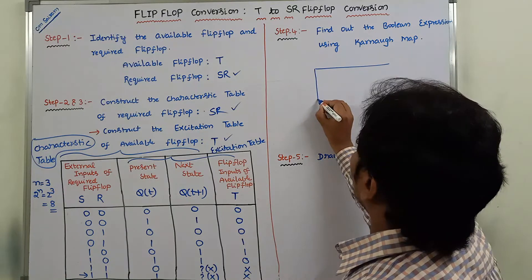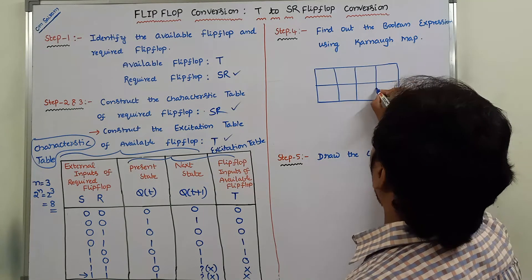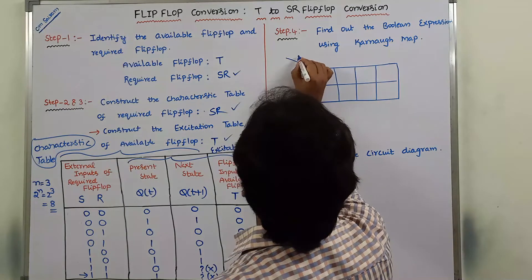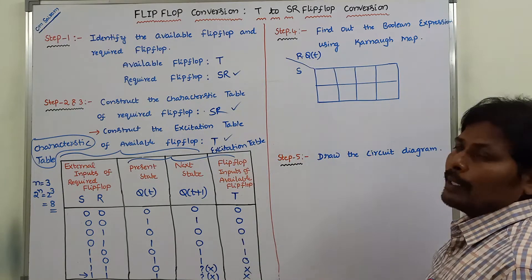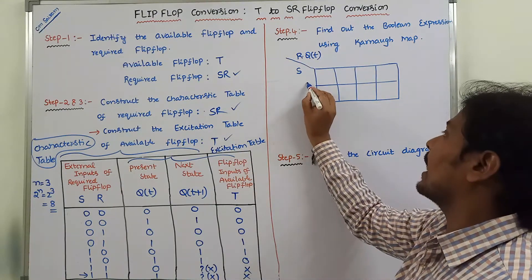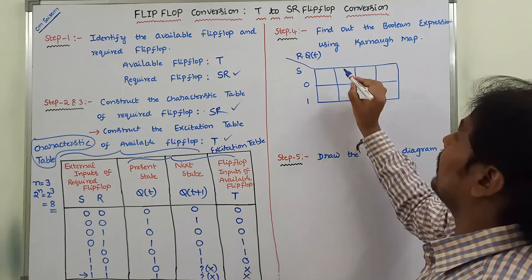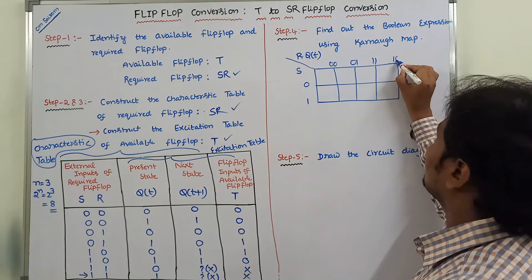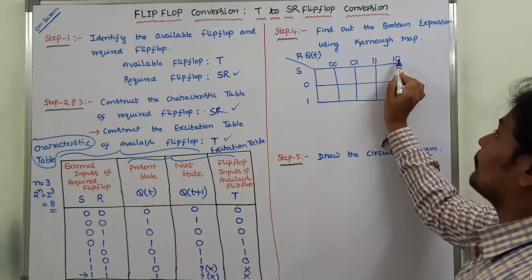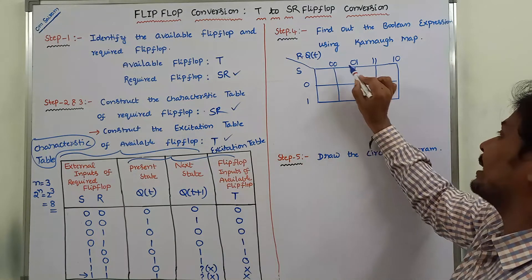The three-variable Karnaugh map contains 8 cells. The inputs are S, R, and Q(T). S is on the horizontal side and can take values 0 or 1. R and Q(T) are on the vertical side with four possible input combinations using gray code: 00, 01, 11, 10. We use gray code format, not binary.